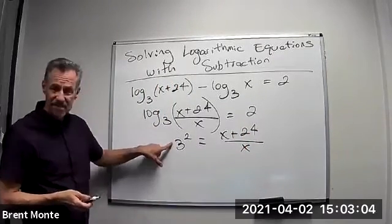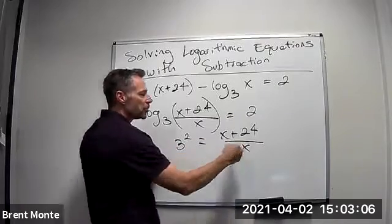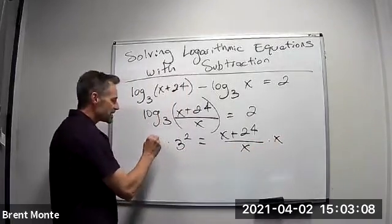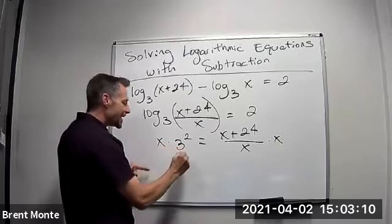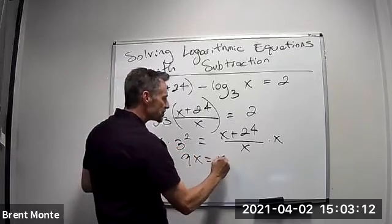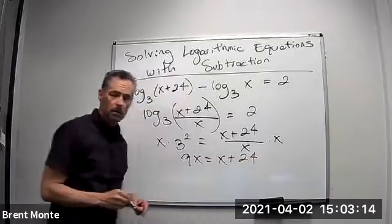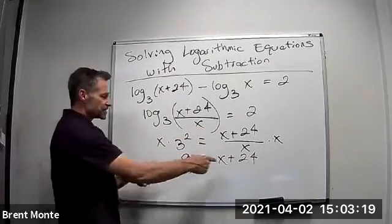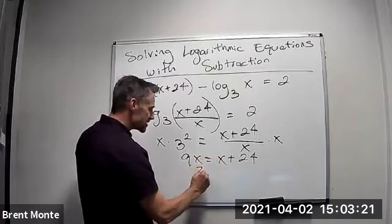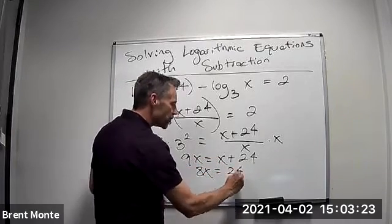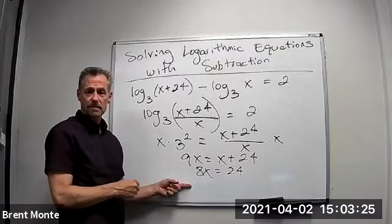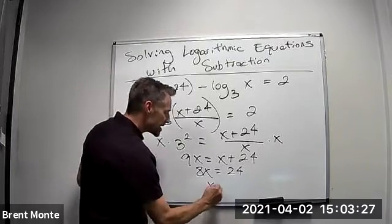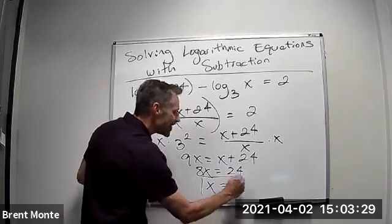We know this is 9, so I'll multiply both sides by x to get rid of the denominator: 9x = x + 24. Now I subtract x from both sides: 9x - x is 8x = 24. Then divide by 8: 24 divided by 8 is 3. That's my answer.